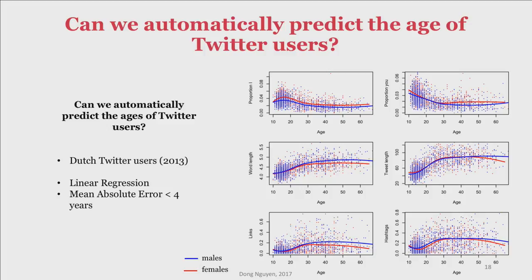But we did see that the model didn't work very well for all Twitter users. Looking at the data, I think the data explains why. For example, a plot shows the relative frequency of words like "I," "me," "my," etc. — you see that young people talk more about themselves, and females tend to talk a little bit more about themselves too. But the trend kind of flattens after around 30 years. We also see that in other graphs — word length increases by age but also flattens around after 30 years. Tweet length, number of links, and number of hashtags show similar patterns. So for an automatic model, it's very hard to distinguish, for example, between a 40 and a 50-year-old person just based on language.